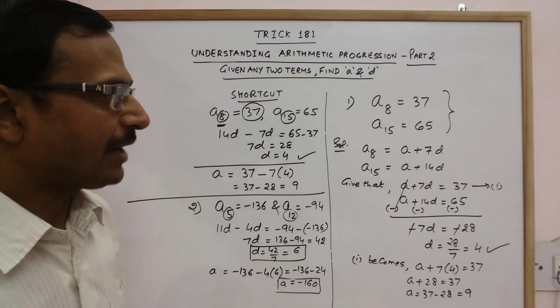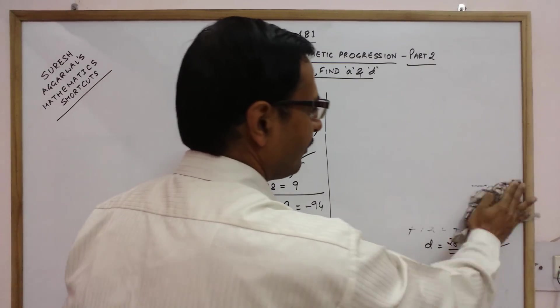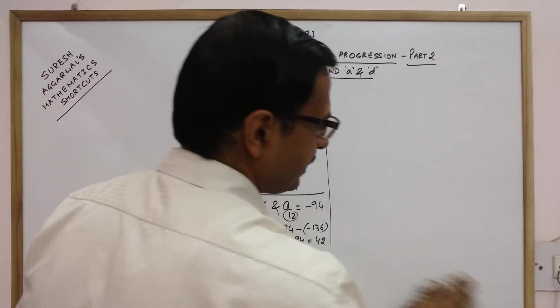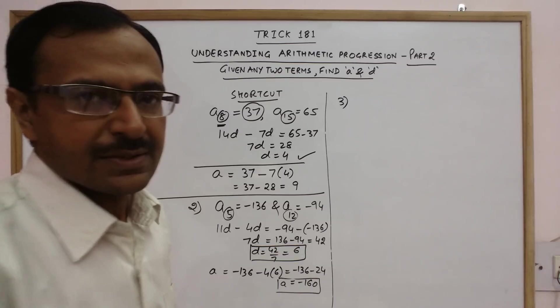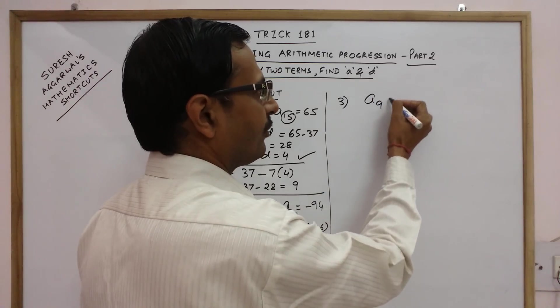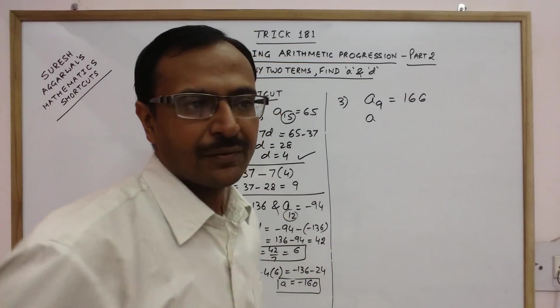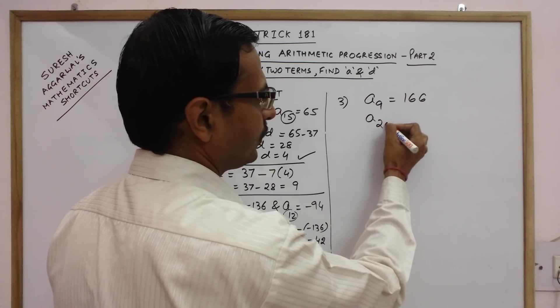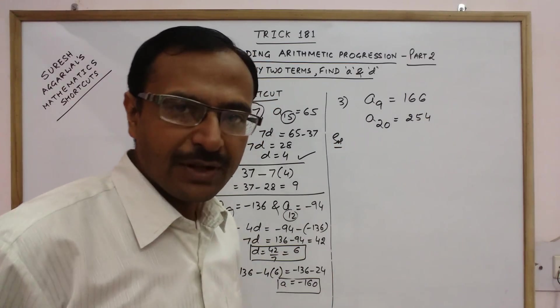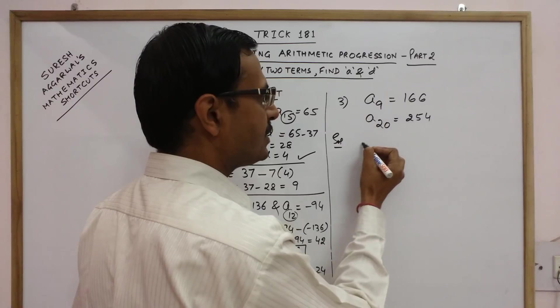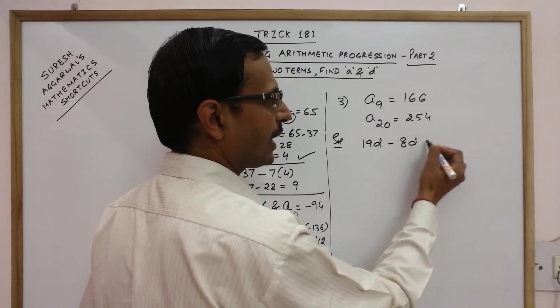Likewise you can solve a variety of problems related to this concept. Given two terms you can find the value of A and D. Final example and then we will conclude this trick. Say we have the 9th term as 166 and the 20th term as 254. Now let us find the value of D first. Here we have 20 so 19D. Here we have 9 so 8D. Subtract.